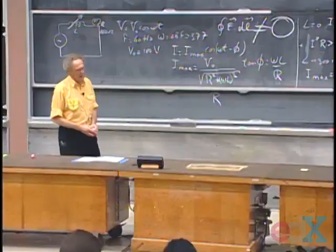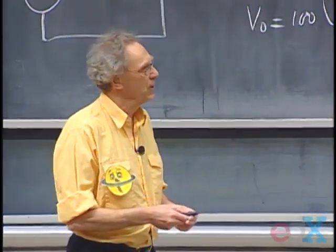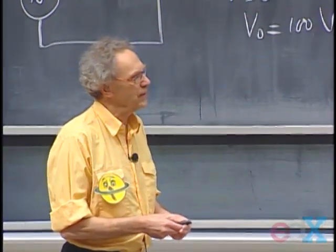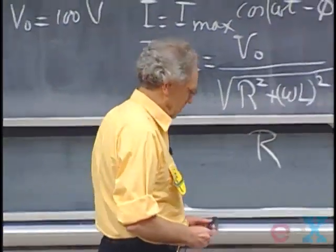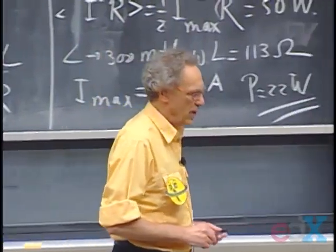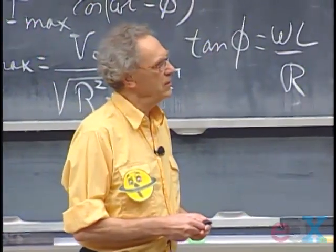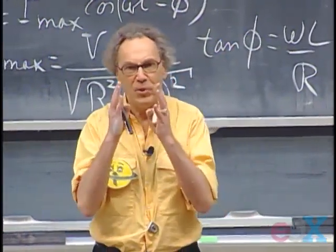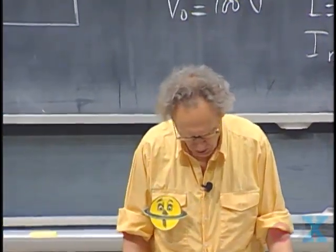Displacement current is always a little bit problematic in the sense that there are not too many problems you can do with it. This is the displacement current term that Maxwell added to Ampere's law. The only application at this stage in 802 that I can think of is the one I covered hard in lectures: a parallel-plate capacitor with circular plates, which you charge or discharge, and you calculate using this law what the magnetic field is in between the capacitor plates. Check your notes from that lecture or watch it on the web.